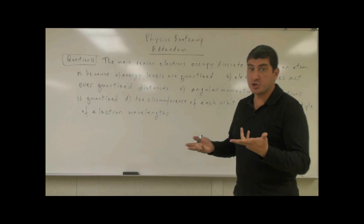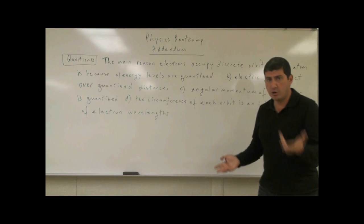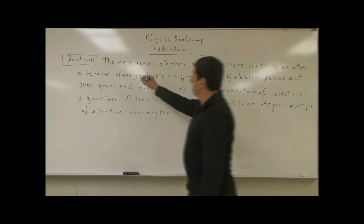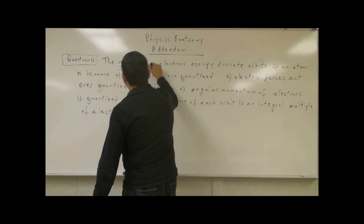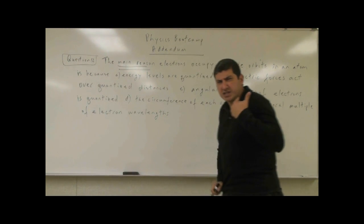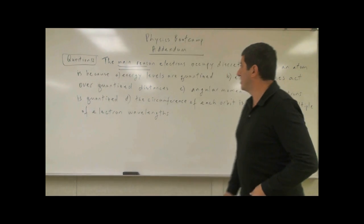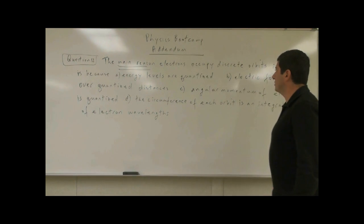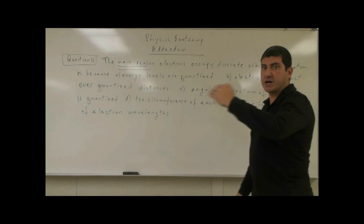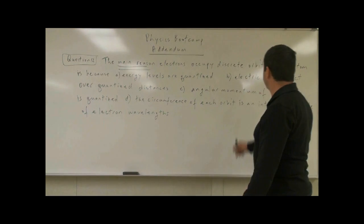Some of these choices might actually be true. However, we want to get to the bottom of the main reason — what is the main reason that electrons occupy discrete orbits, the ones we call n equals 1, n equals 2?